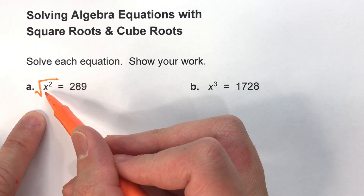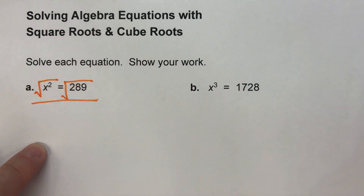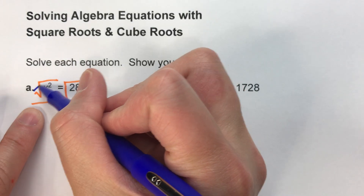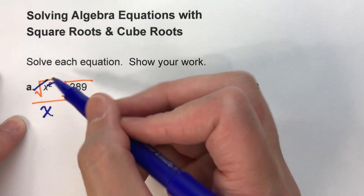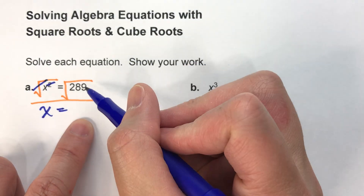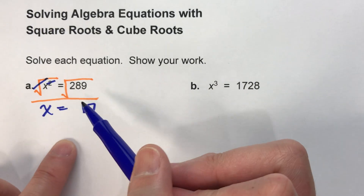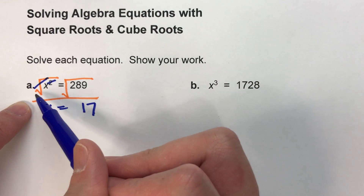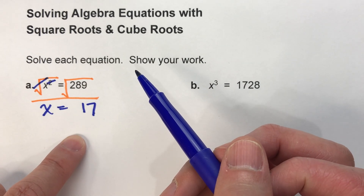What you do to one side of the equal sign we have to do to the other side. When we do that, squaring and square rooting undo each other and we're left with x. Drop down the equal sign. Now the square root of 289 is 17, but here's the thing — whenever we undo x squared in an algebra equation using a square root on both sides, there are two possible answers.